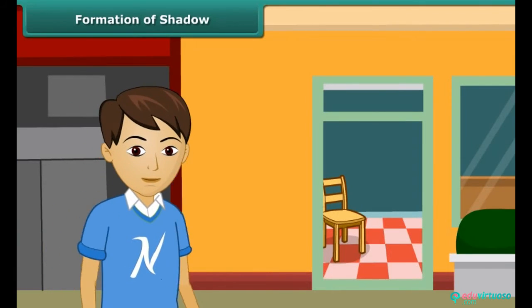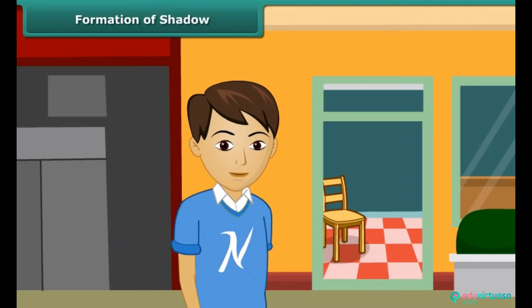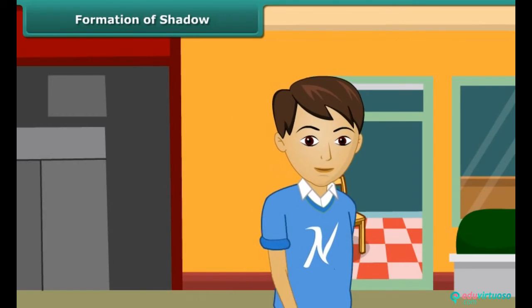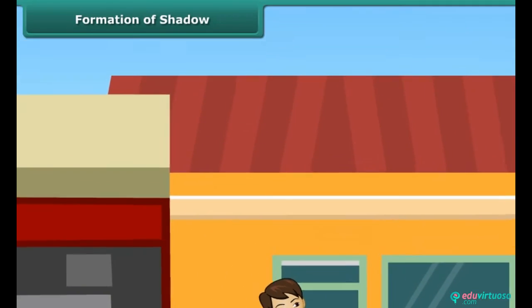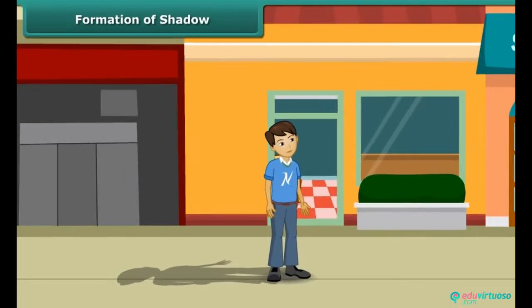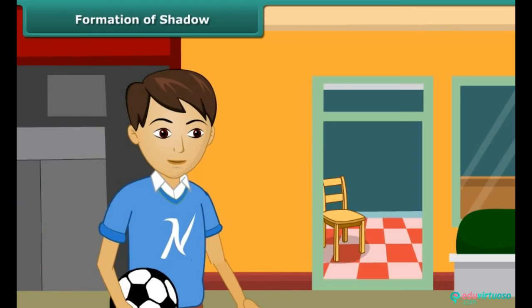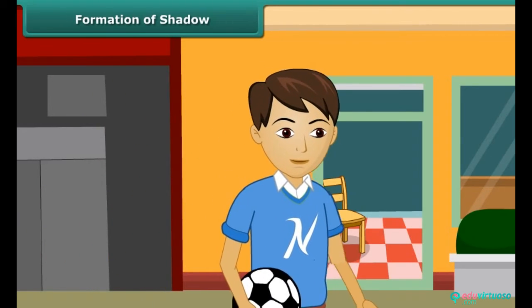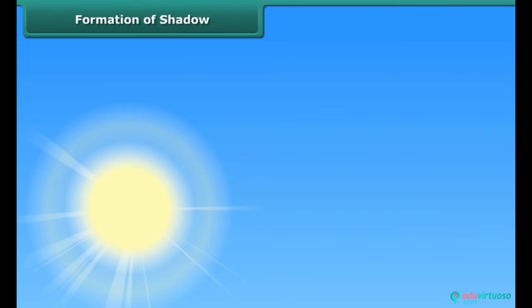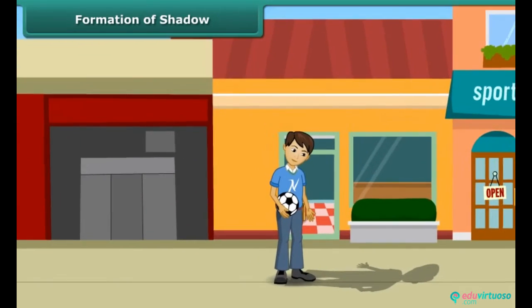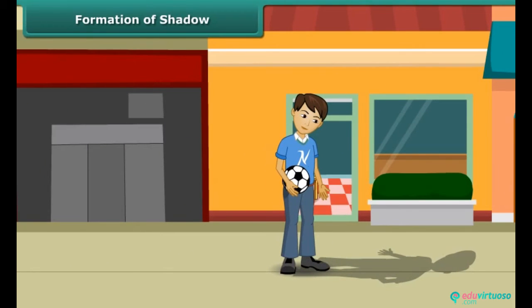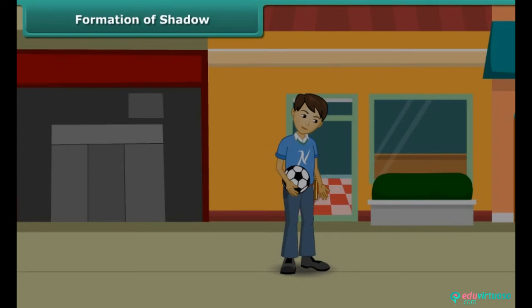On a Sunday morning, you are on your way to the market to buy some milk. The sun is shining bright on your face and you see your shadow on the ground behind you. The same day in the evening, you are out in the park playing football. The sun's rays fall on your back and you see your shadow on the ground in front of you. After a while the sun sets, and there are no more shadows.